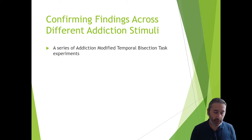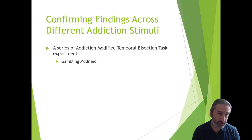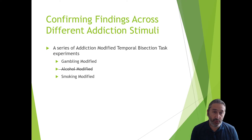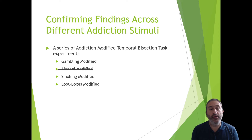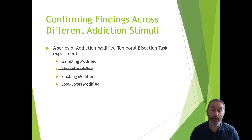What we did is take the temporal bisection task and use half stimuli that are addiction-related and half neutral ones. Examples include a gambling-modified one using gambling-related images, a smoking-modified one with tobacco or cannabis products, and a loot boxes-modified one, which is more recent and highly relevant today. I will present evidence of robust and consistent findings across all these paradigms that can add to research in addiction and to the theory of time perception.